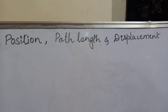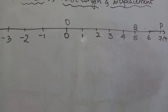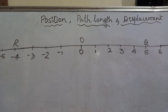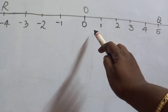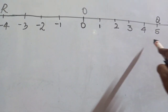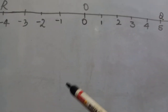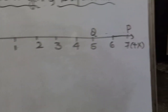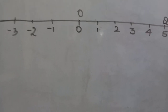Here you can see a number line I have drawn. It is a straight line since we are dealing with motion in a straight line. The center is zero, the right-hand side has positive numbers, and the left-hand side has negative numbers. I have marked points P, Q, O, and R on this line.